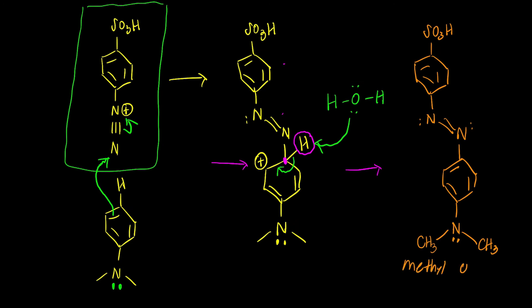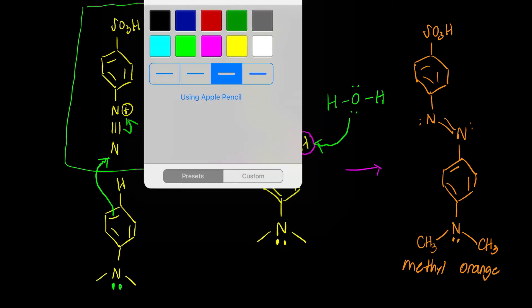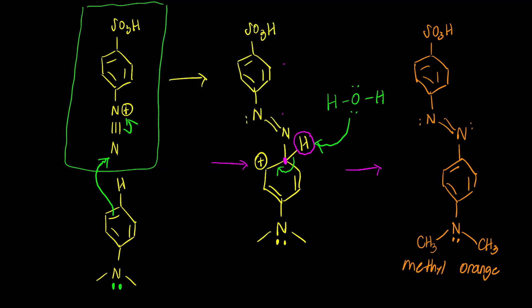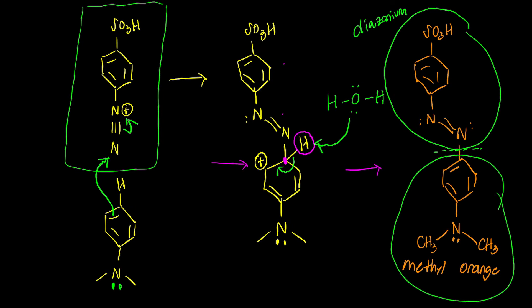If you think backwards through the retrosynthesis, this is the key bond that you're forming. This part comes from the diazonium, and this part comes from something that's highly activated - for example, a phenol or an aniline. This is how all the dyes are generally made.